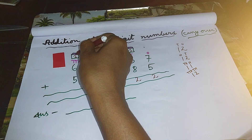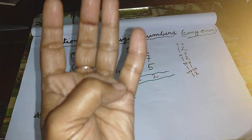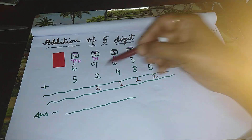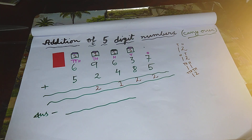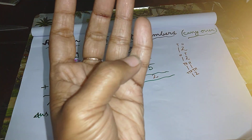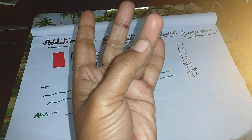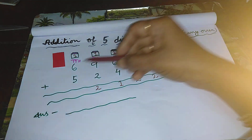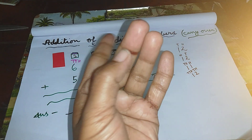Now add all these digits. The first digit is one — count one. The next digit is six, so count more six lines: one, two, three, four, five, six. The next digit is five, so count more five lines: one, two, three, four, five.